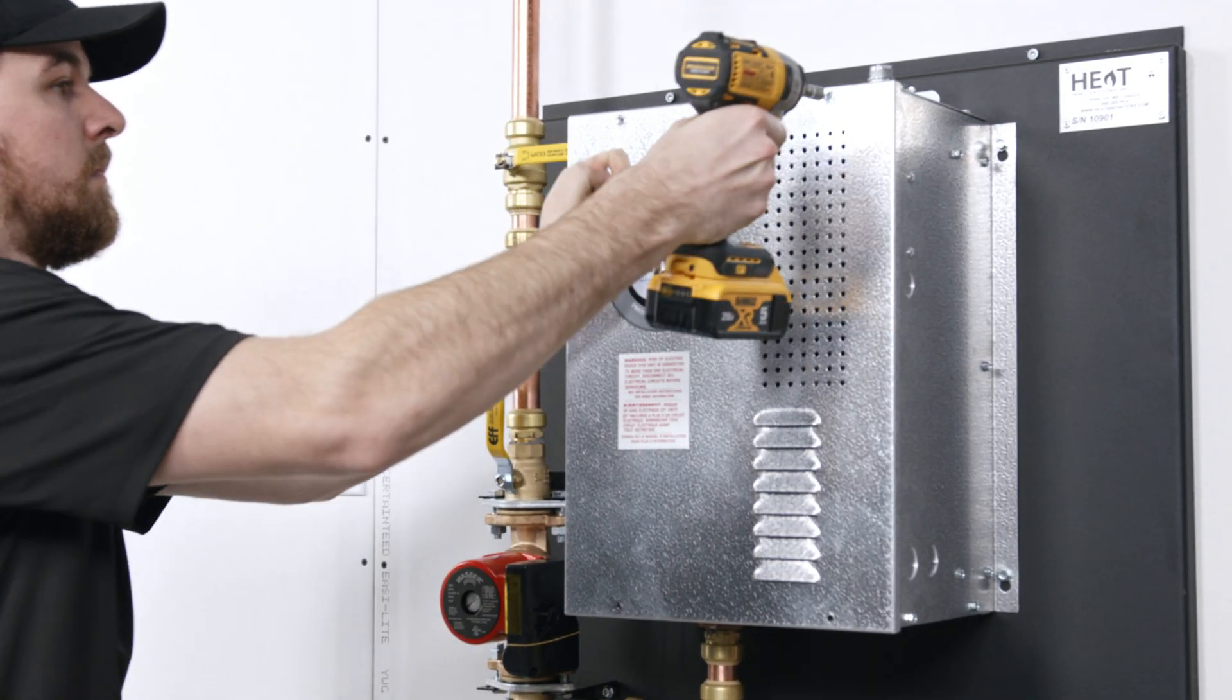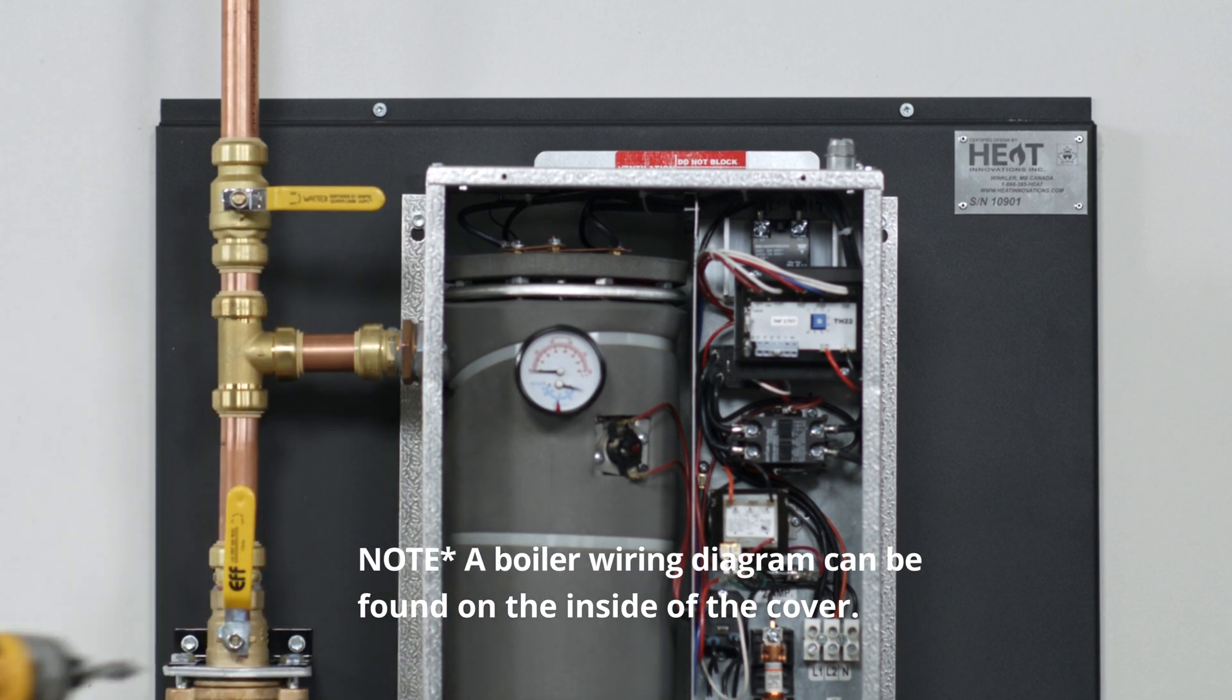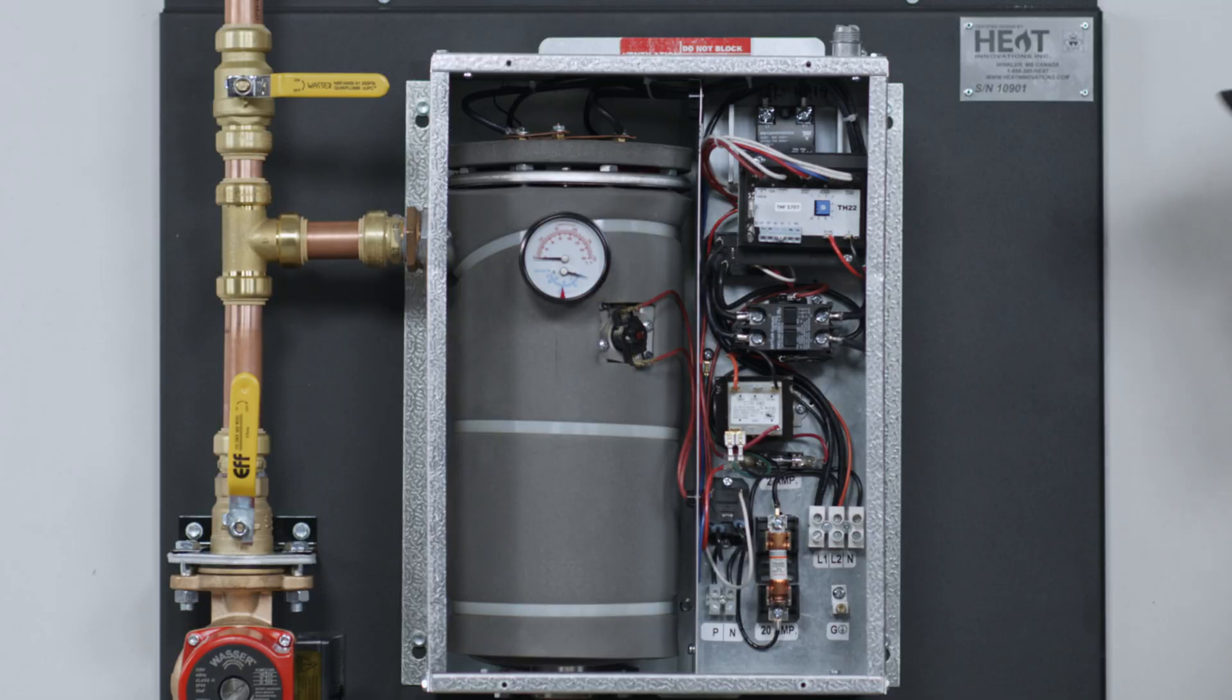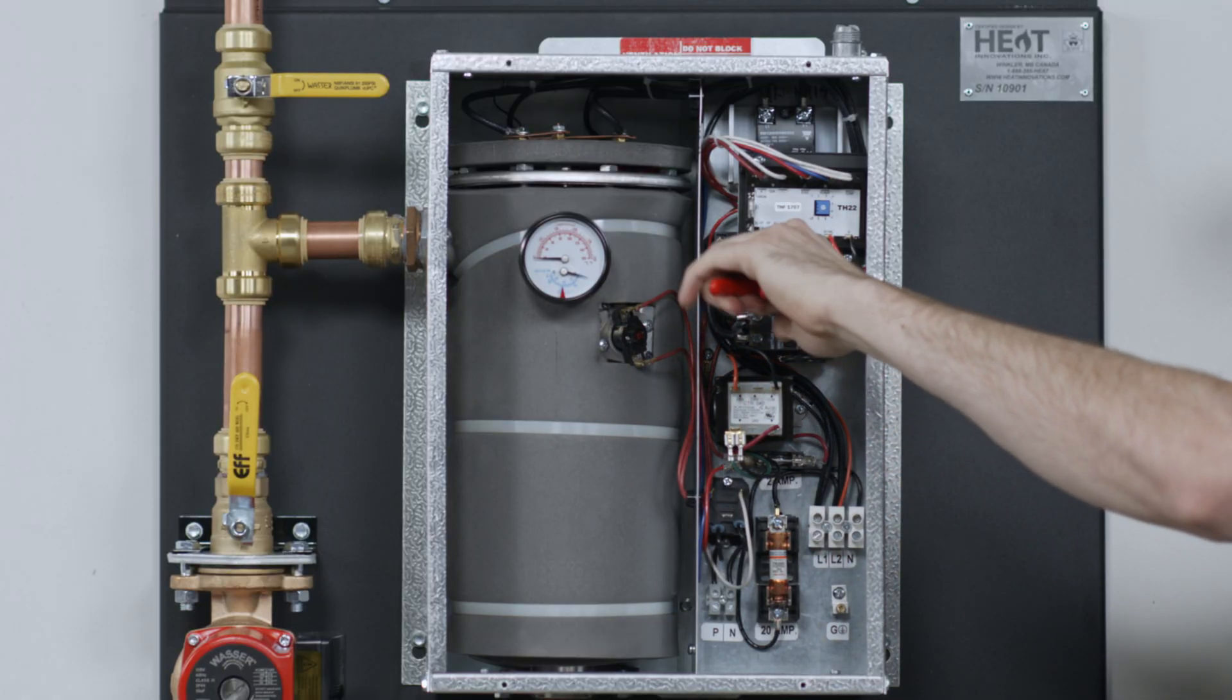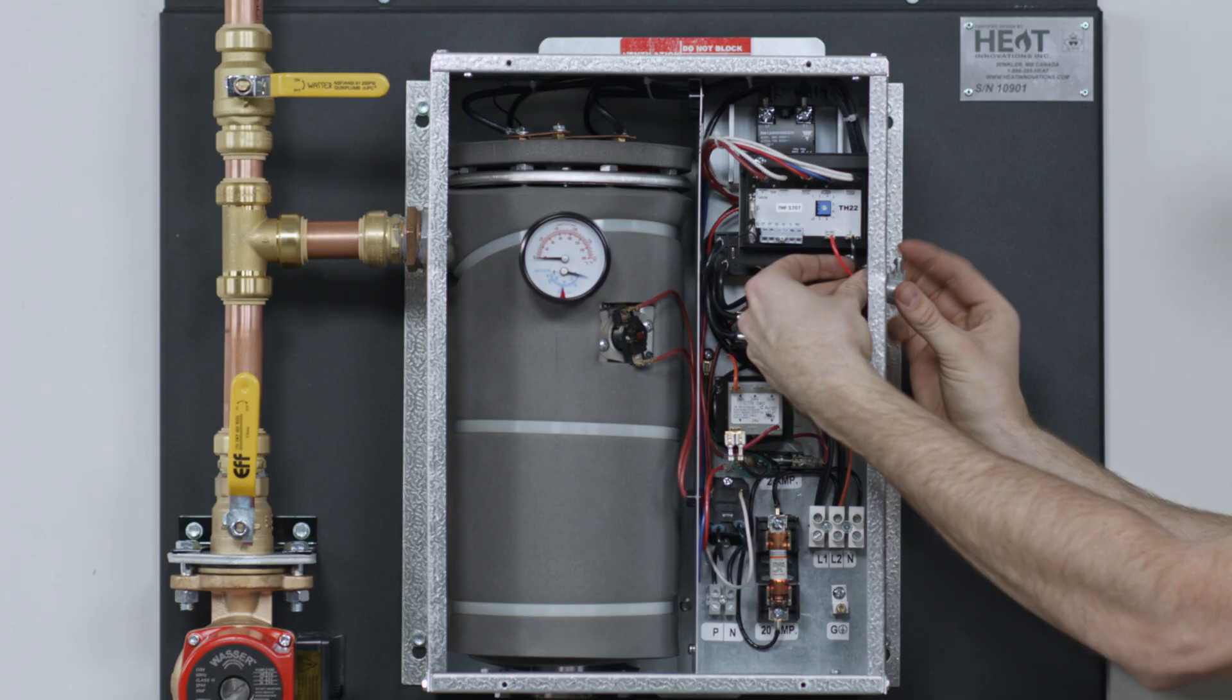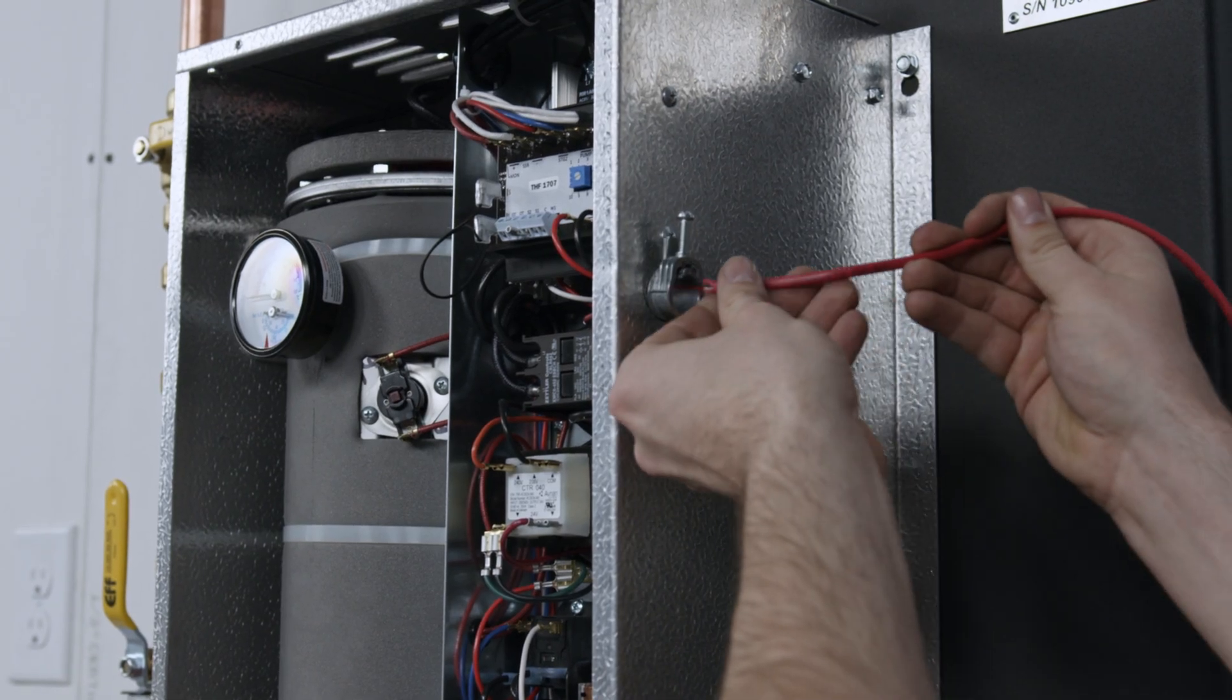The electrician will remove the boiler cover, remove the electrical punch-out, insert wire clamp and run thermostat wire.